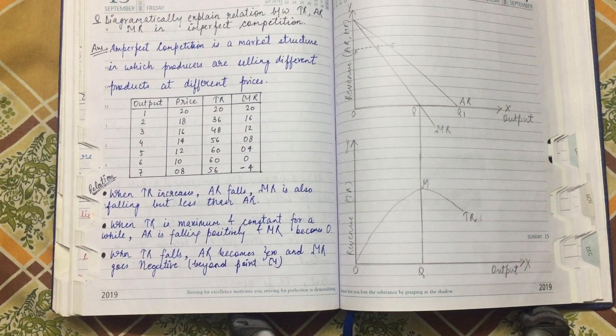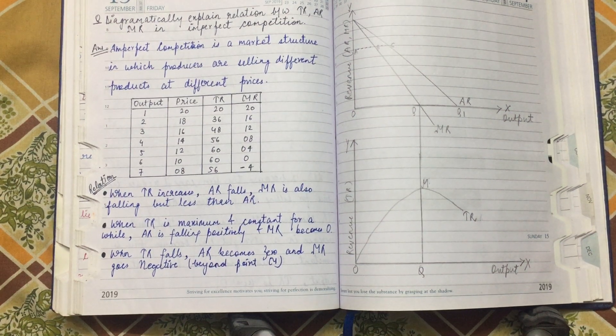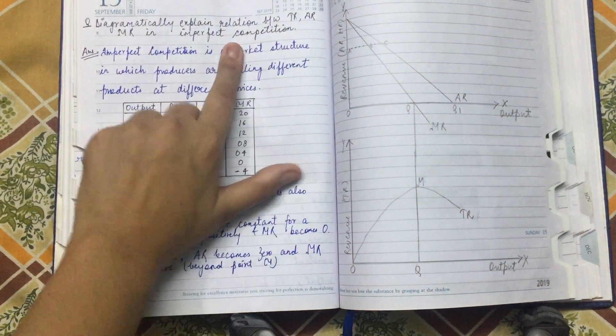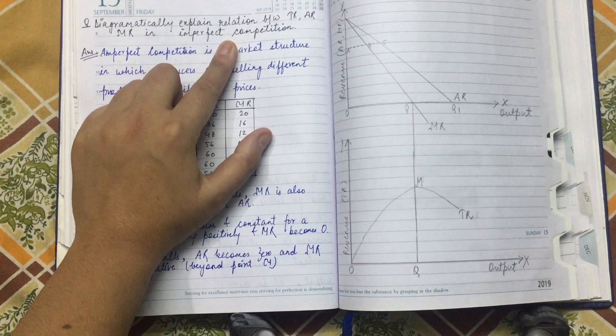Hello everyone, welcome to my channel. The topic of discussion for today is to graphically explain the relation between TR, AR and MR in imperfect competition.